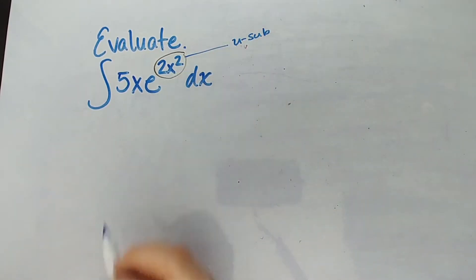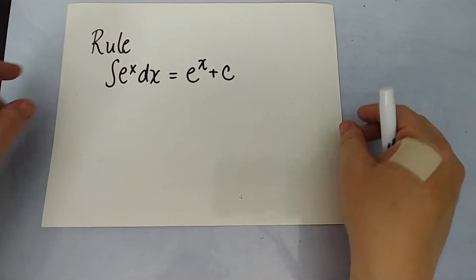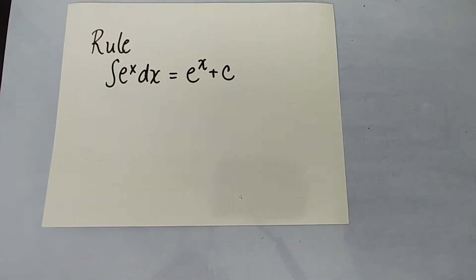And you are going to let this ugliness be u substitution. And here's why. Remember our rule for integrating e to the x? e to the x is its own integral.